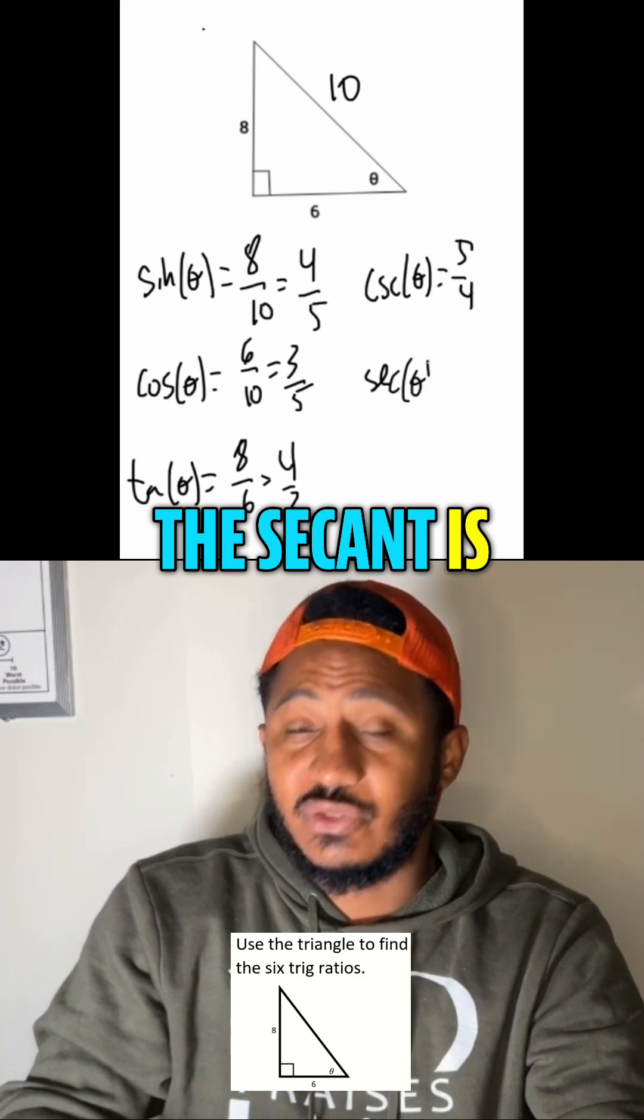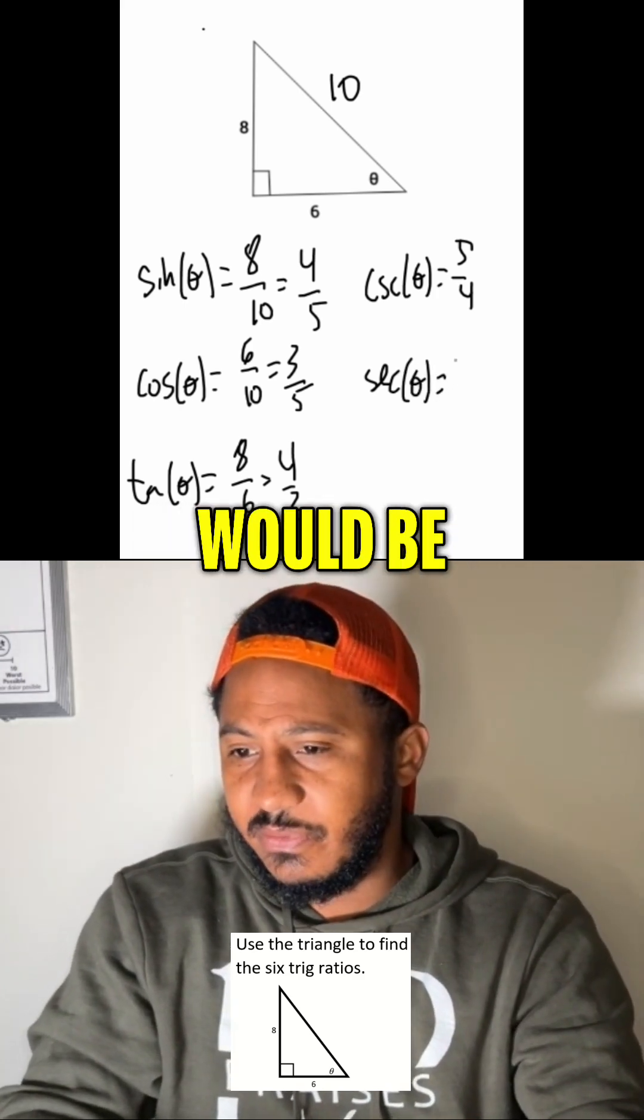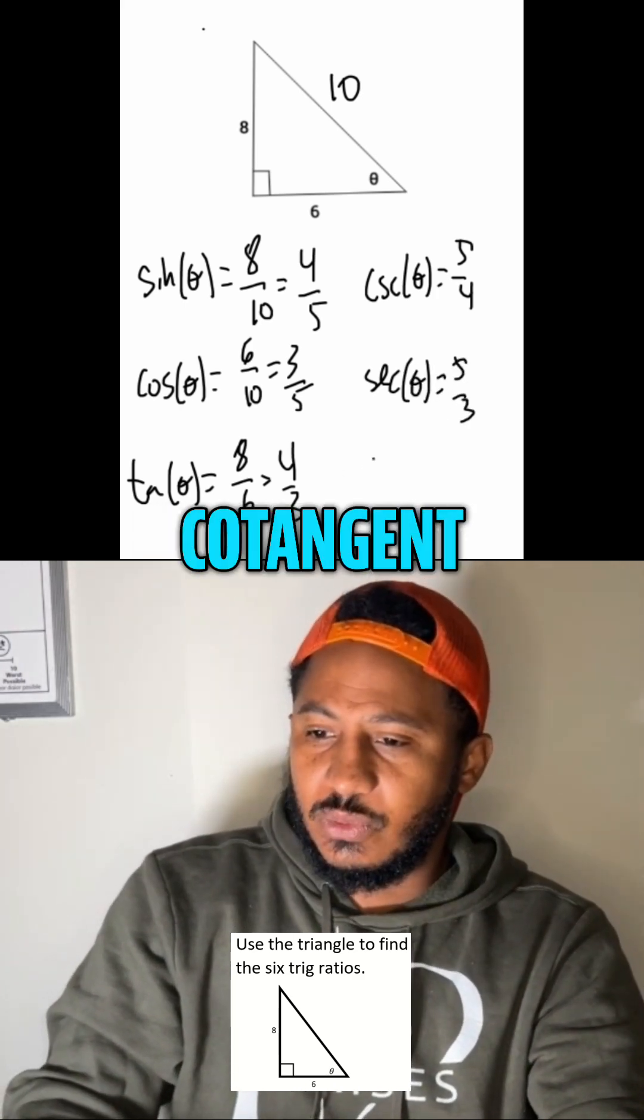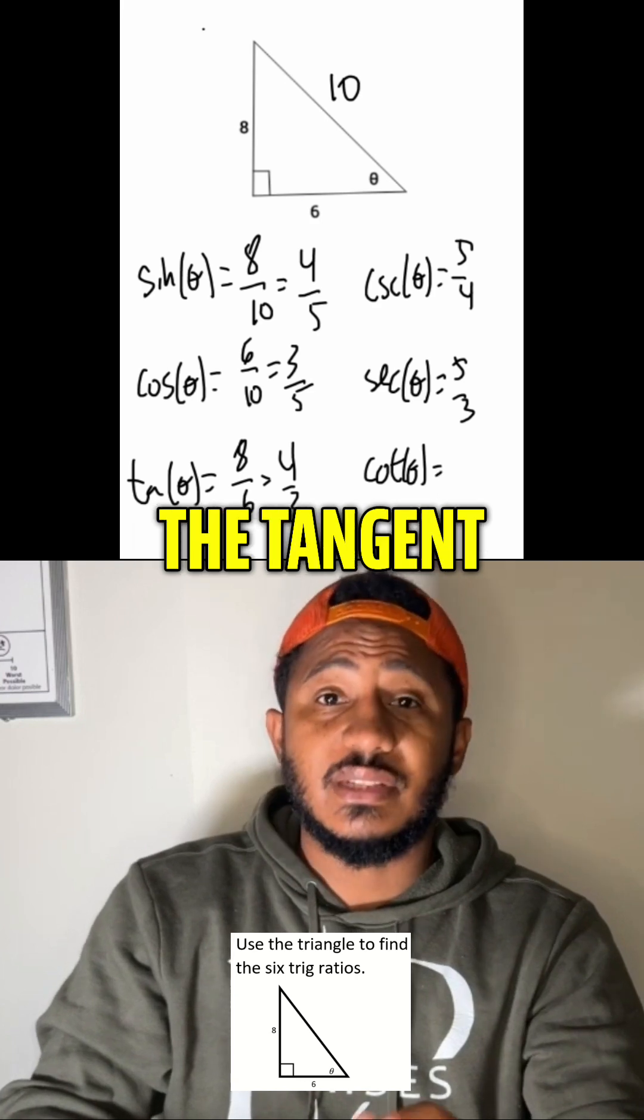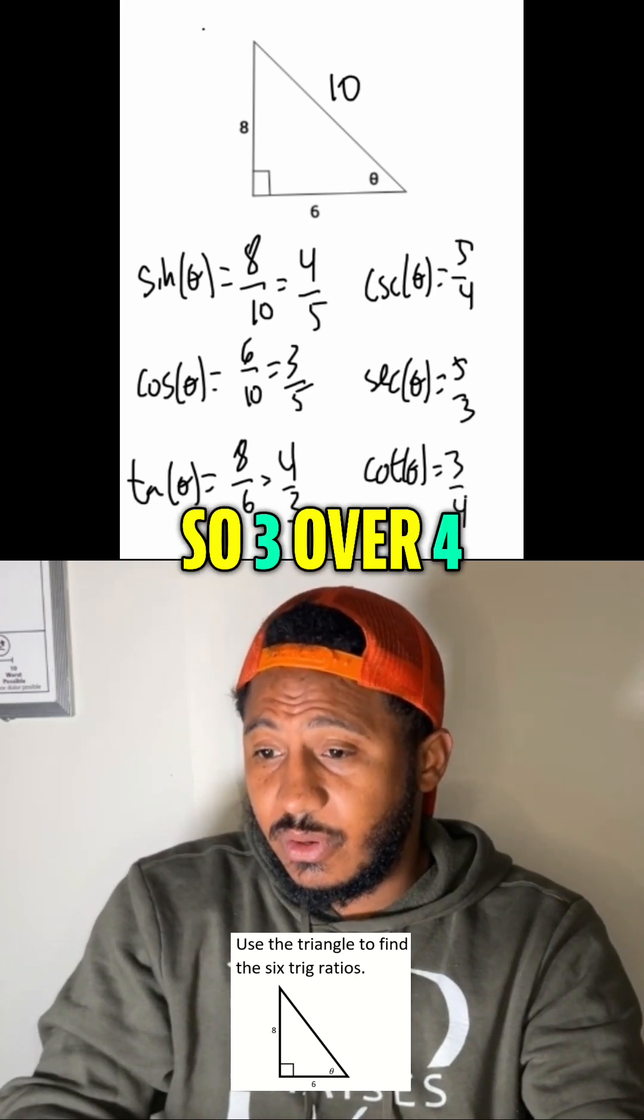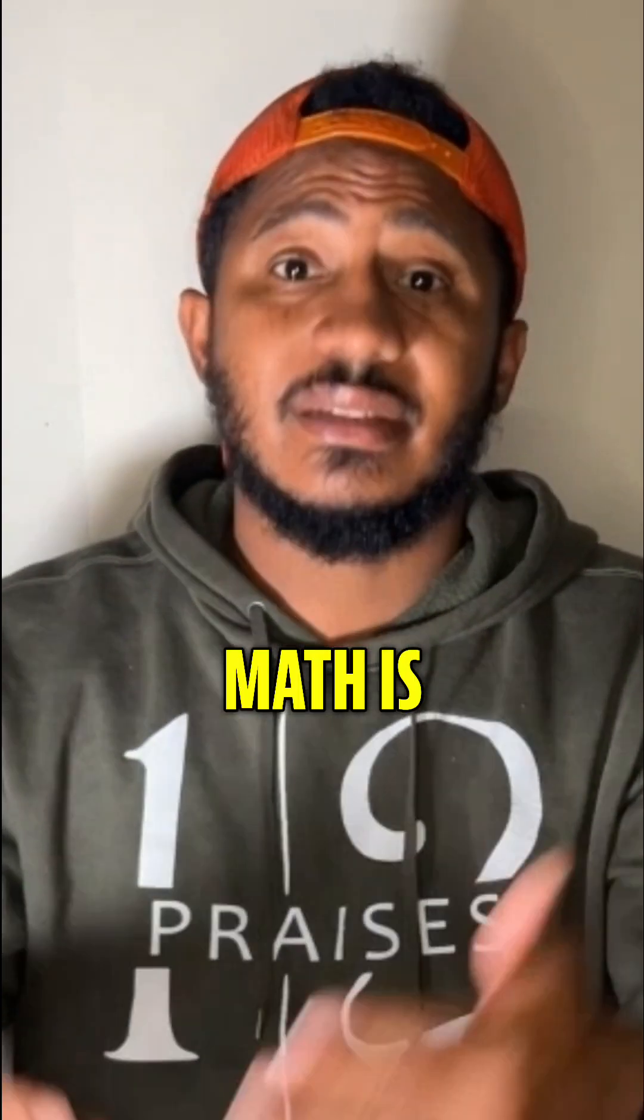The secant is the reciprocal of the cosine. So, that would be 5 over 3. And the cotangent is the reciprocal of the tangent. So, 3 over 4. Always remember, math is everywhere.